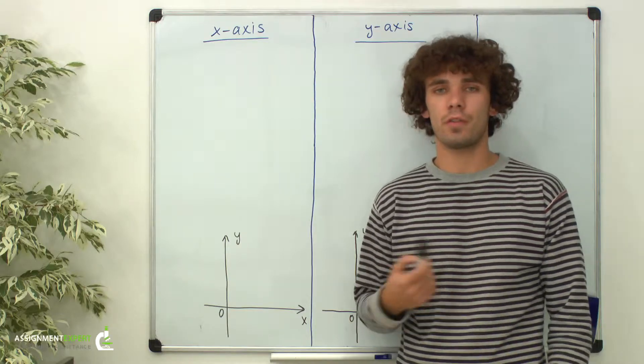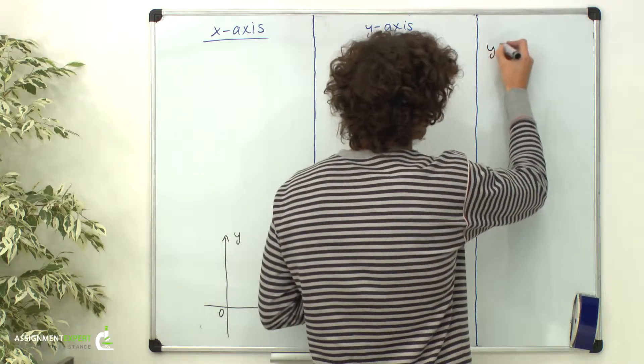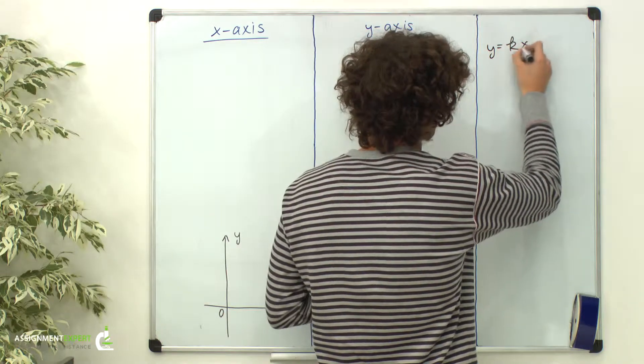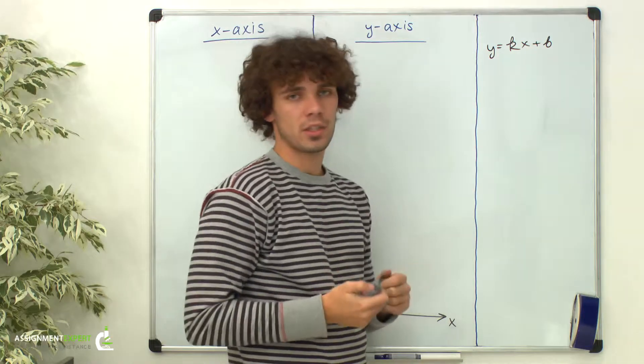First of all, recall the general equation of the line in a slope-intercept form: y equals kx plus b, where k is the slope of the line and b is the y-intercept.